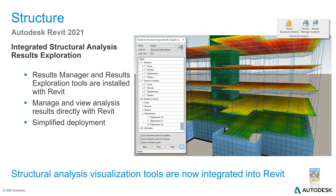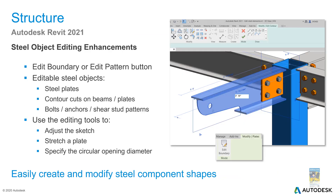Structural analysis results exploration has been integrated within Revit 2021. You can view analysis results in a manner similar to Robot Structural Analysis. If you need to modify a steel member, you can retrace the profile of edges and edit boundaries using new editing tools to create interesting custom designs.